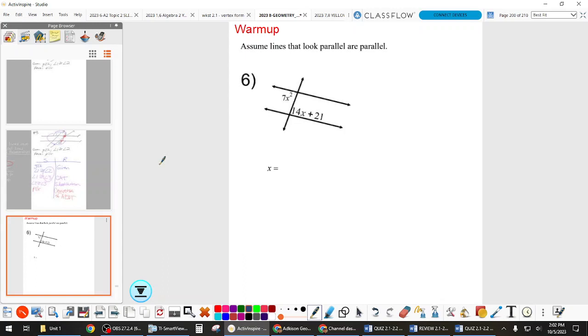Guys, it says assume the lines that look parallel are. Normally, we don't make assumptions that we can't prove by geometry or algebra. But in this case, since it says assume, it's kind of the same as saying they're parallel. From there, we need to decide what kind of angles those are, set up a relationship, and then solve like we ought to do. So what kind of angles are those two?